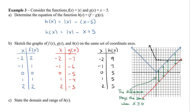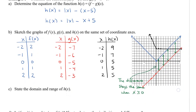The last part here is to state the domain and range of h of x. The domain is all real numbers, and for the range, we can see that the smallest value is positive 5, so y is greater than or equal to 5.